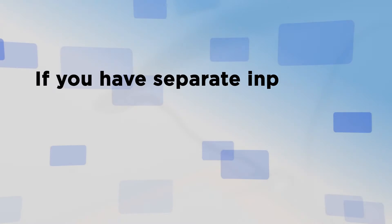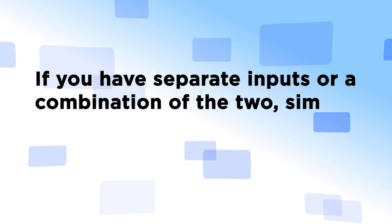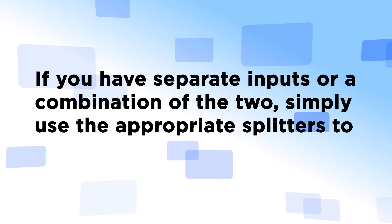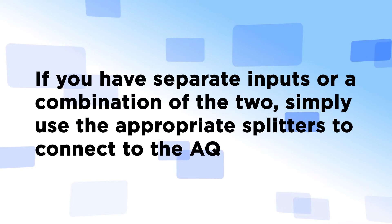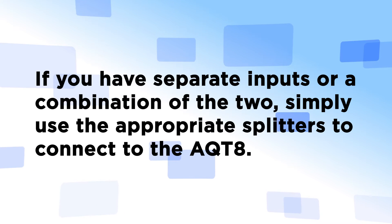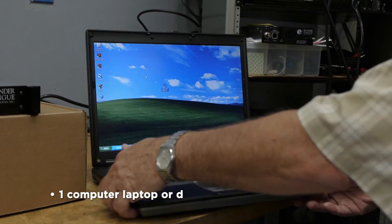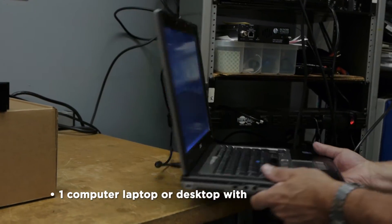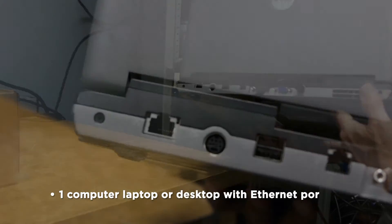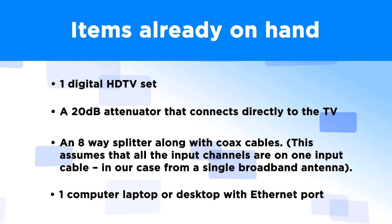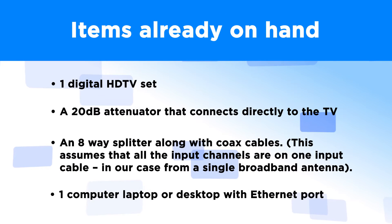If you have separate inputs or a combination of two, simply use the appropriate splitter to connect to the AQT8. And finally, a computer — laptop or desktop — with an Ethernet port. Now that we have everything, let's get started.